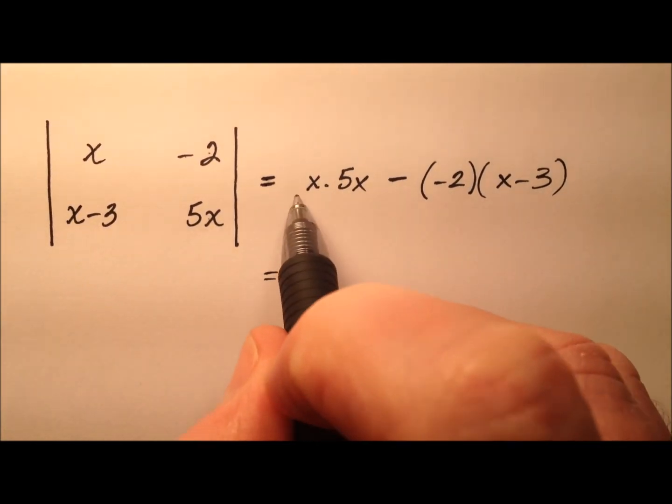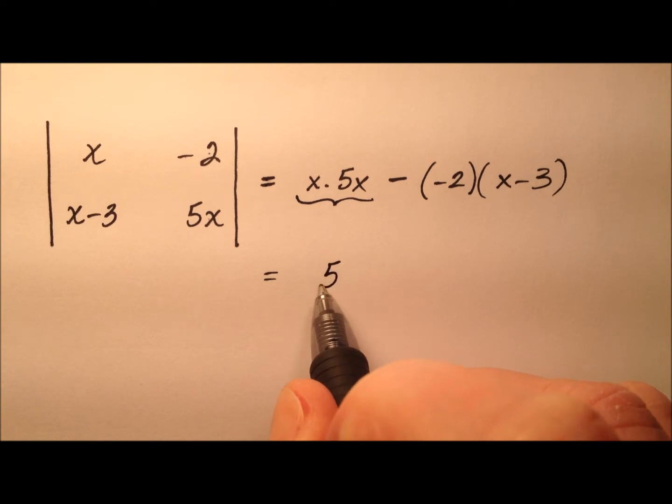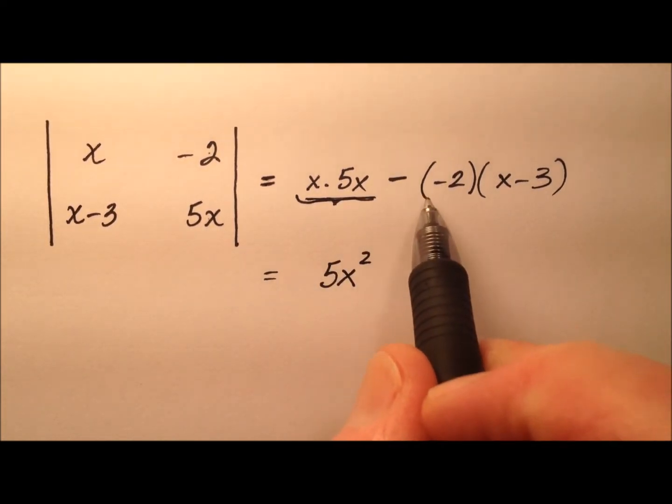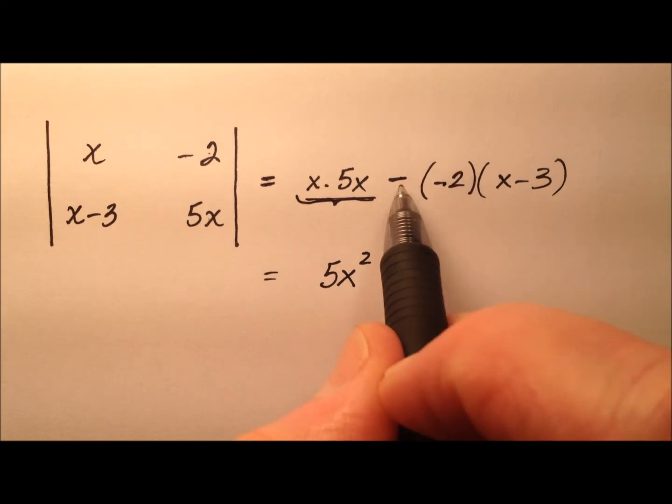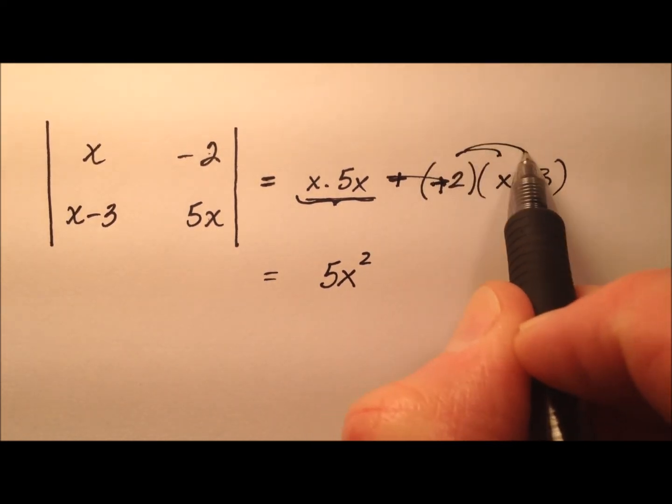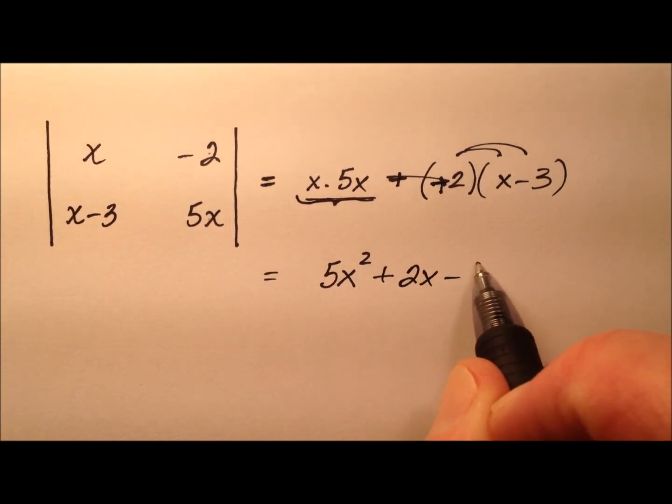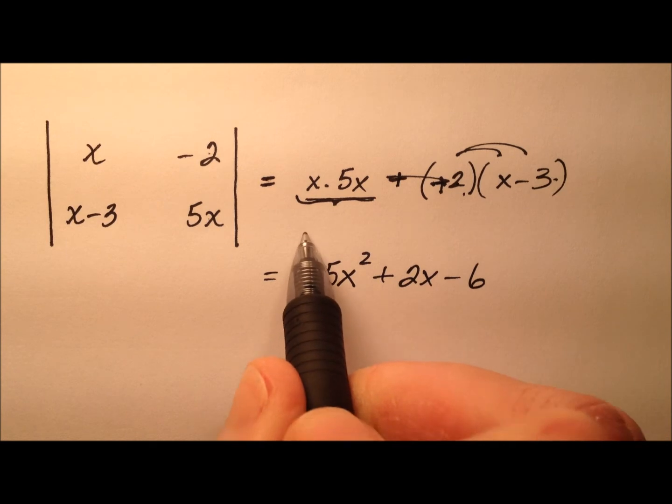So what that looks like is, 5x squared seems to be that first term, and then we have the minus and negative 2. Let's go ahead and make that plus 2, and it looks like we need to distribute that through. So plus 2x and then minus 6 on that final distribution.